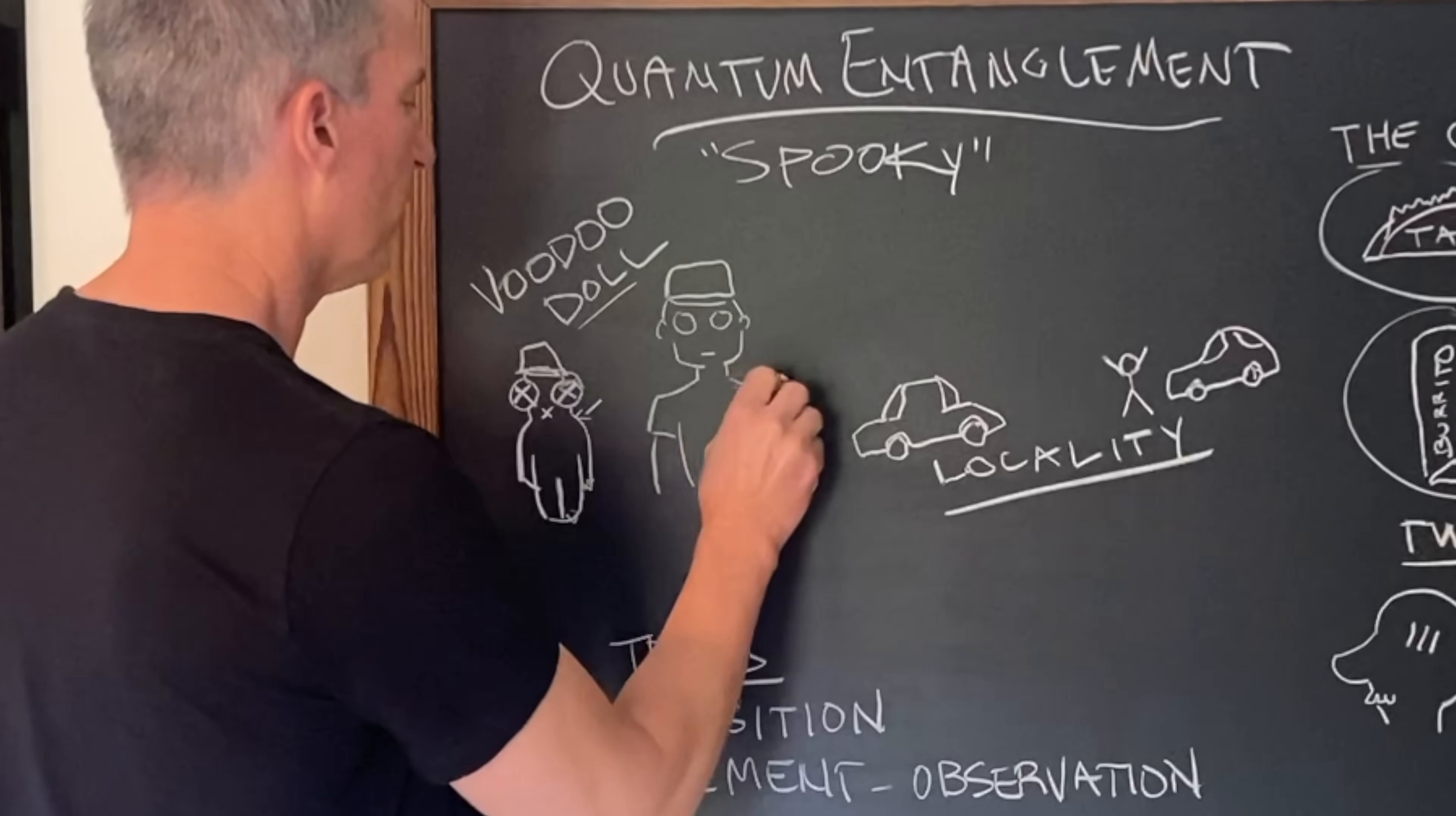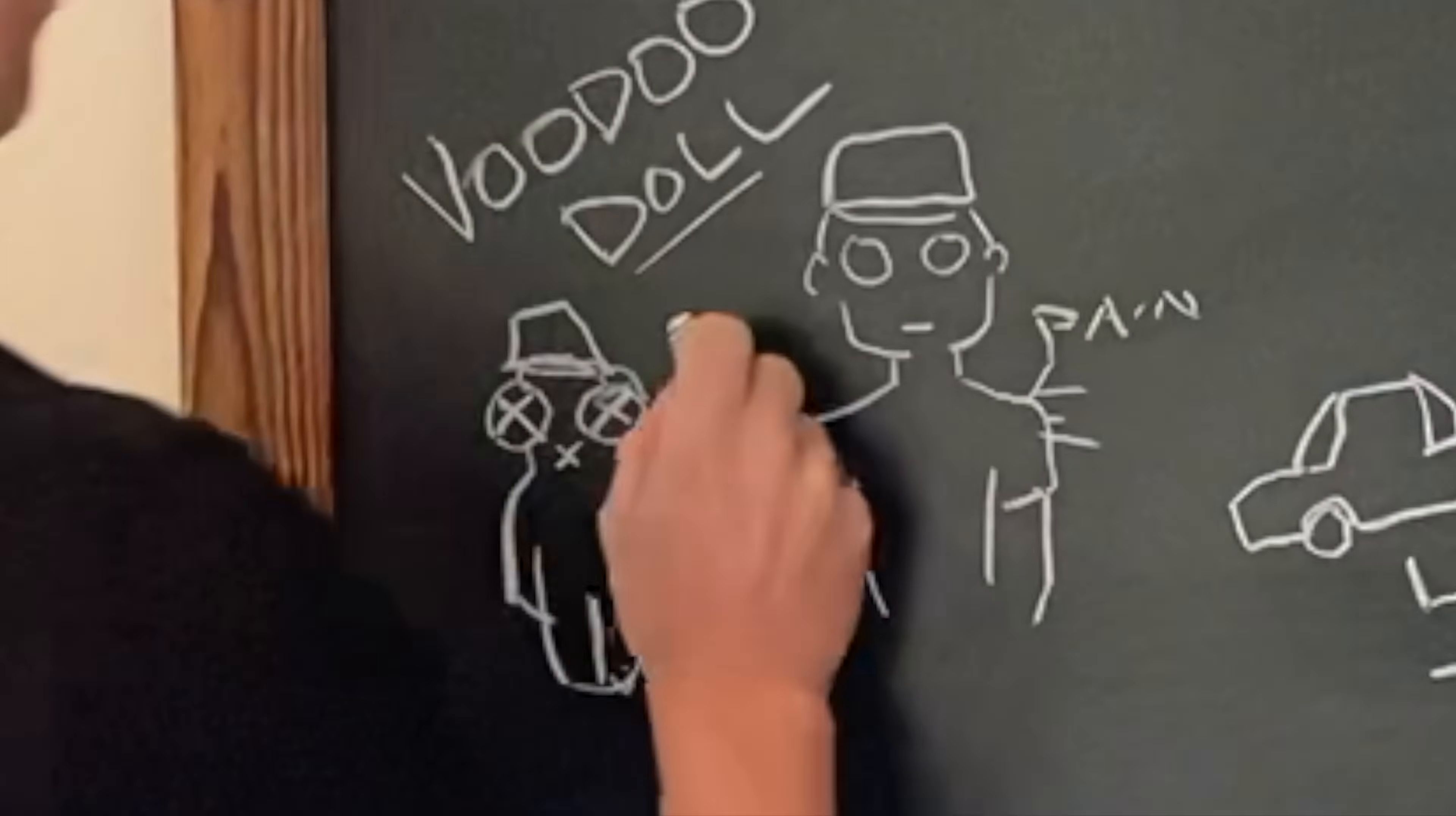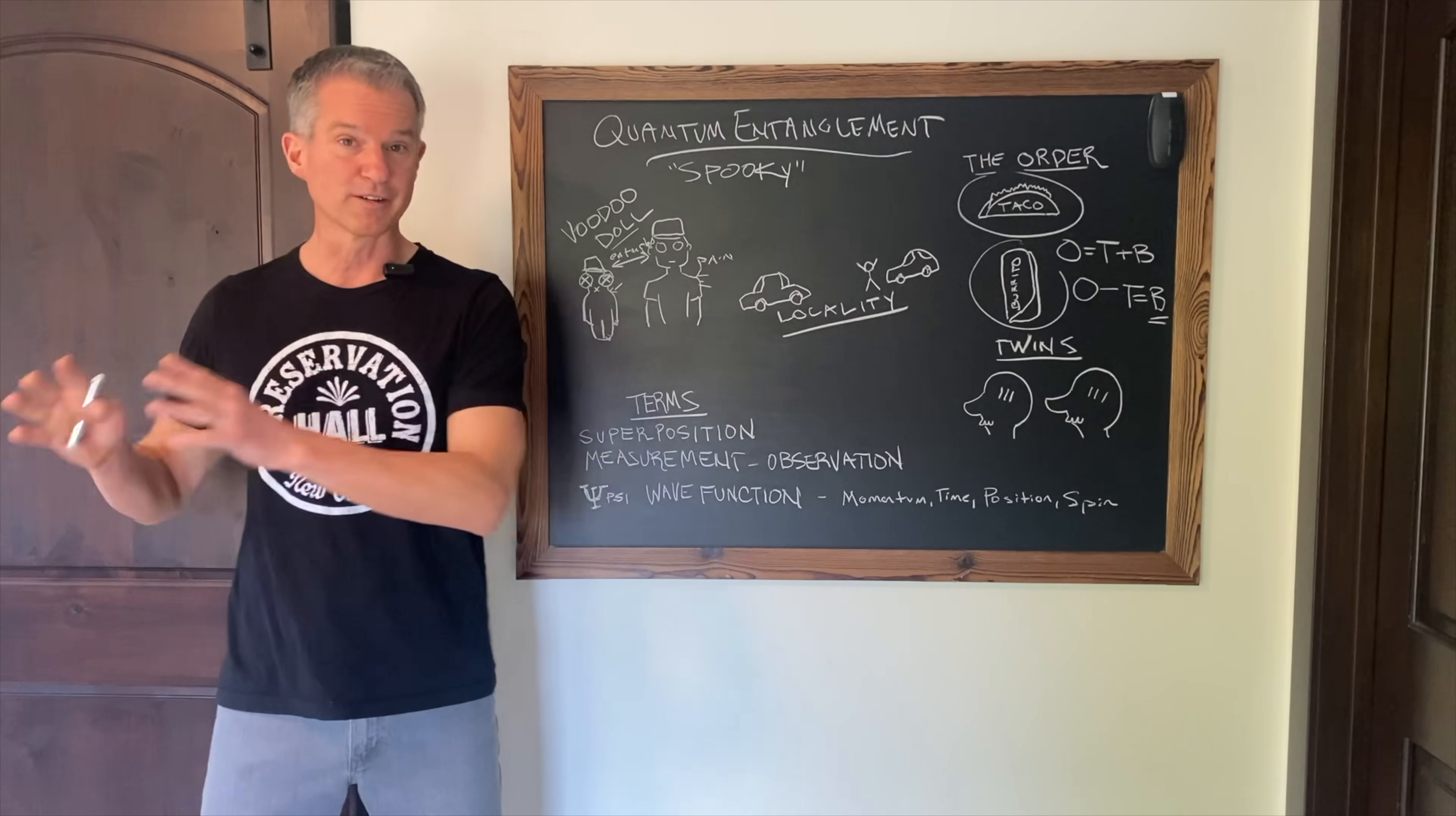to charge that voodoo doll up with voodoo power so that when he sticks a pin into the arm of the voodoo doll, the person that it represents feels pain. And in those scenarios, that's instantaneous. You stick the doll, pain erupts. The point of this analogy is, through the power of voodoo, they became entangled.